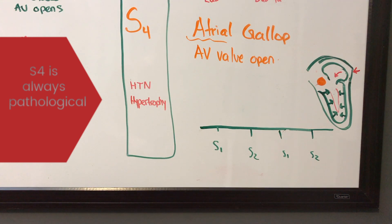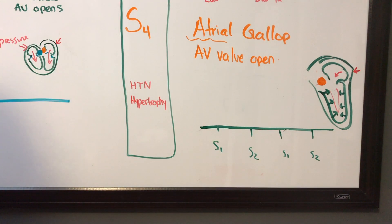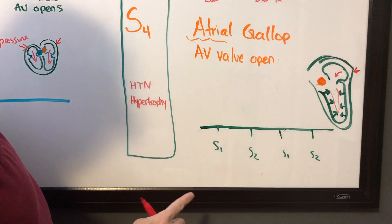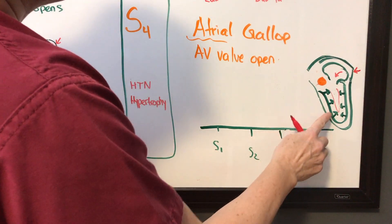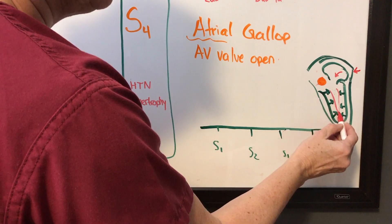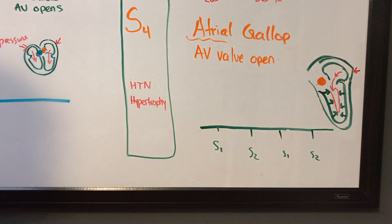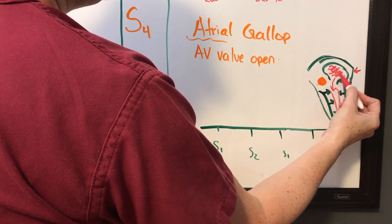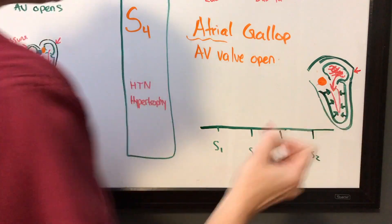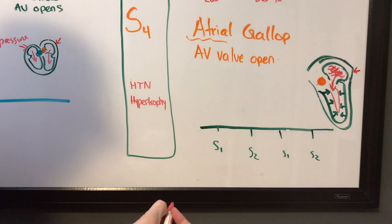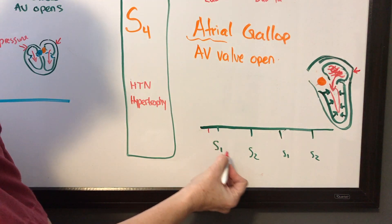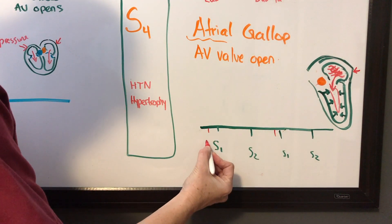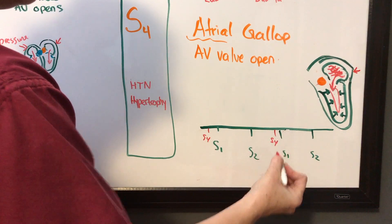In S4, also known as the atrial gallop, the AV valves are still open. As I said, these are both in diastole, which means filling. When we look at the ventricles for an S4, we see that they're resistant — really not wanting to stretch and accept volume. This is common with hypertension and hypertrophy. But the atria still have all of this blood to deliver, so it's going to get more forceful, insisting the heart take more blood. What we end up having is an extra atrial kick, kicking harder, and we get this S4 happening just before those AV valves close.